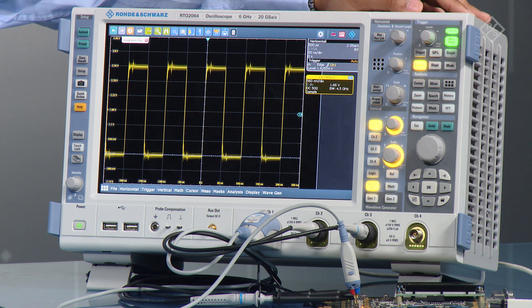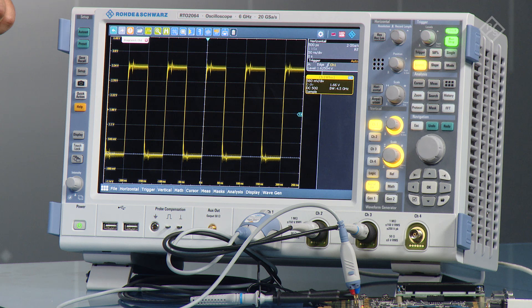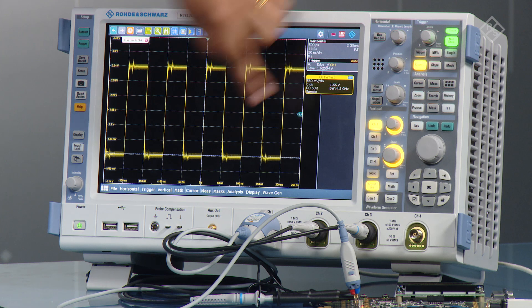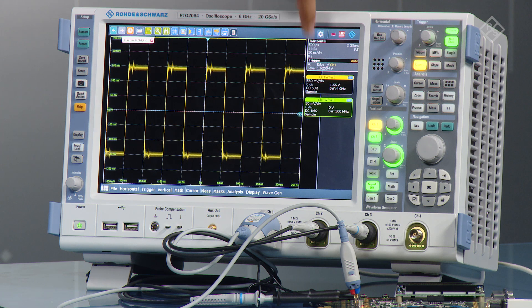On the side there you have all the vertical settings for the instrument as well. The only change when you compare this to most other scopes is probably the vertical settings. We have one set of dials for each of the four channels, and the only change is in the color rings.